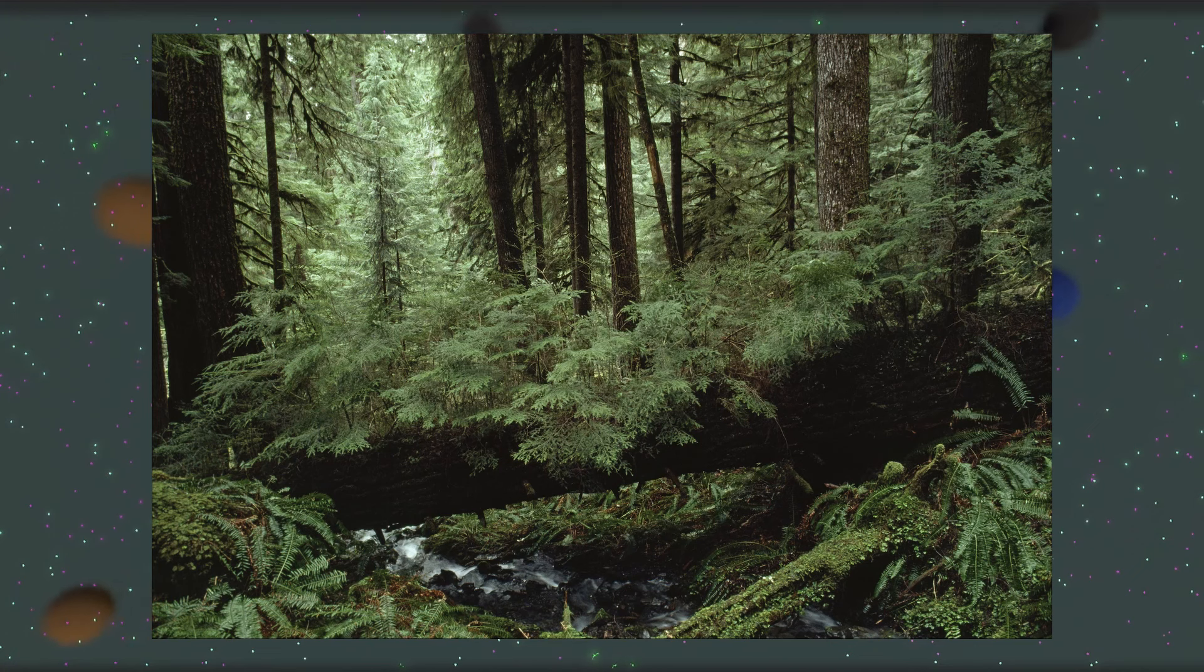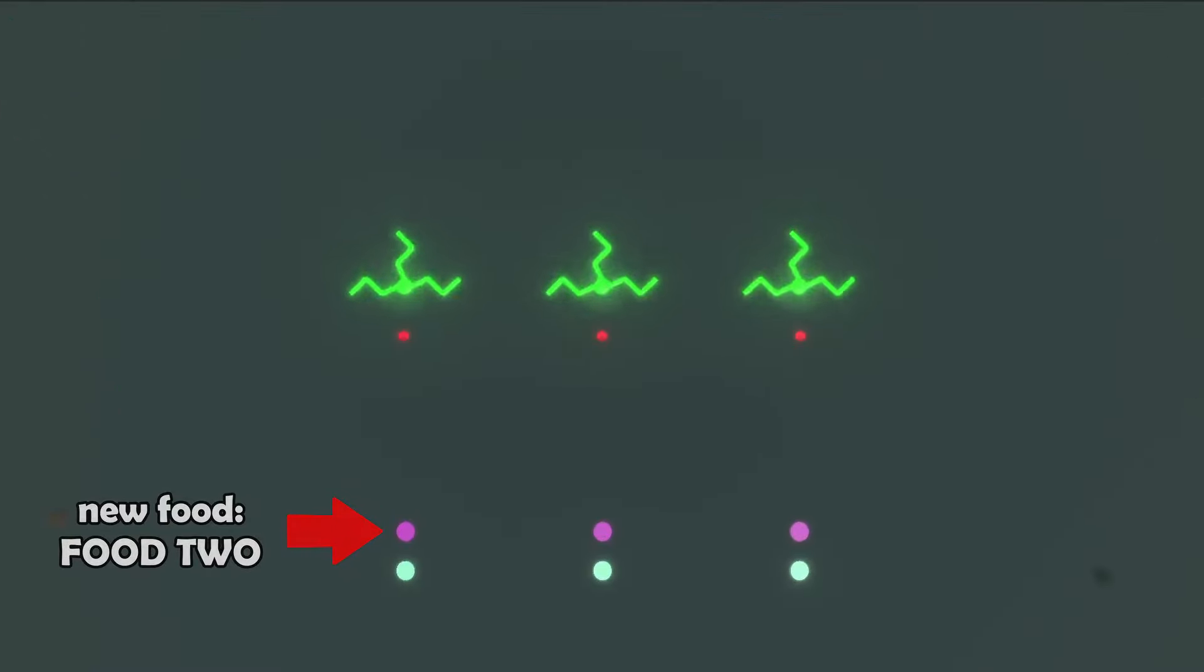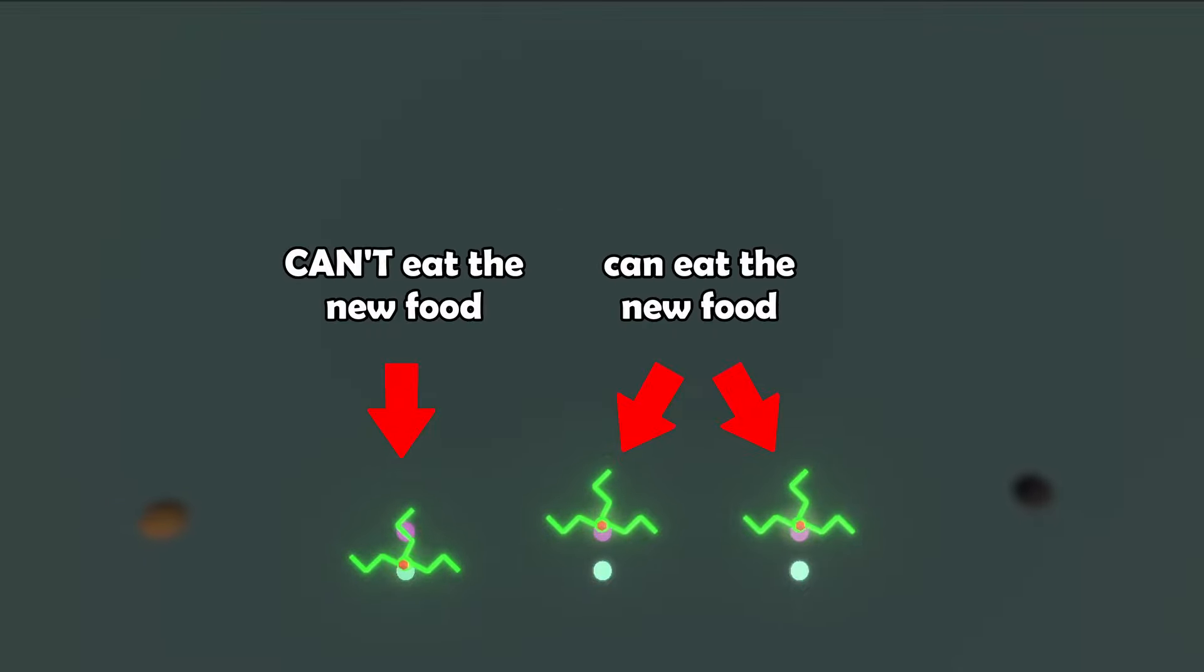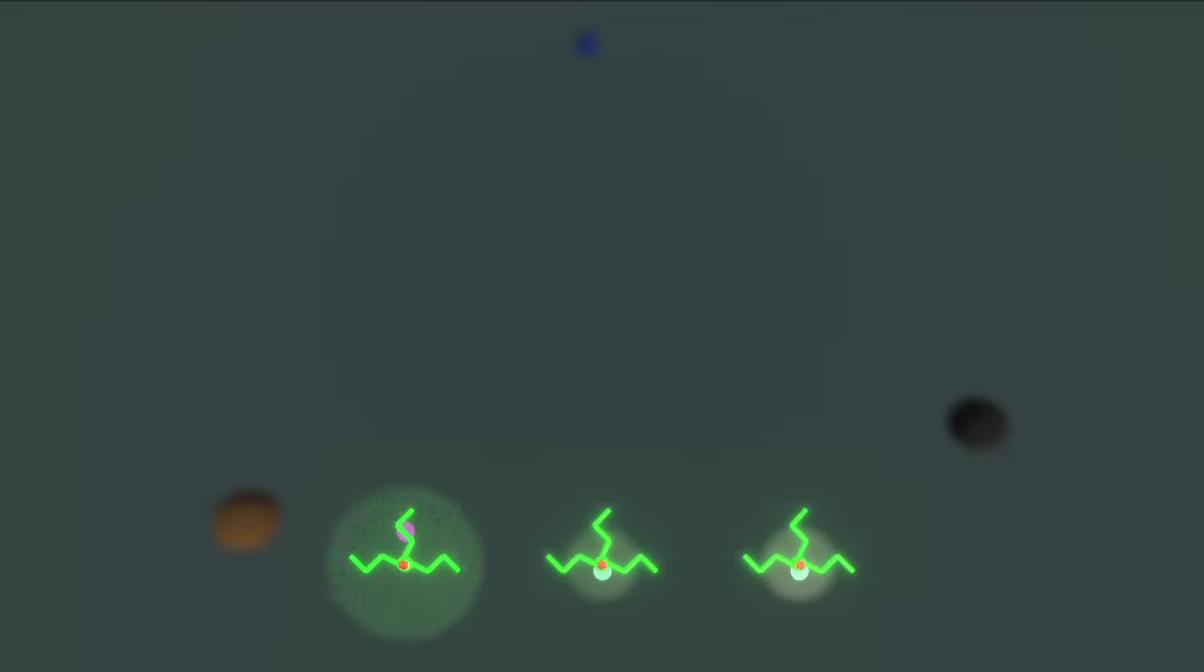In nature, bacteria are very specific about what kinds of foods they can eat and actually gather energy from. So what if we made it such that this virus maybe has a gene that enables the host to be able to consume a new kind of food?